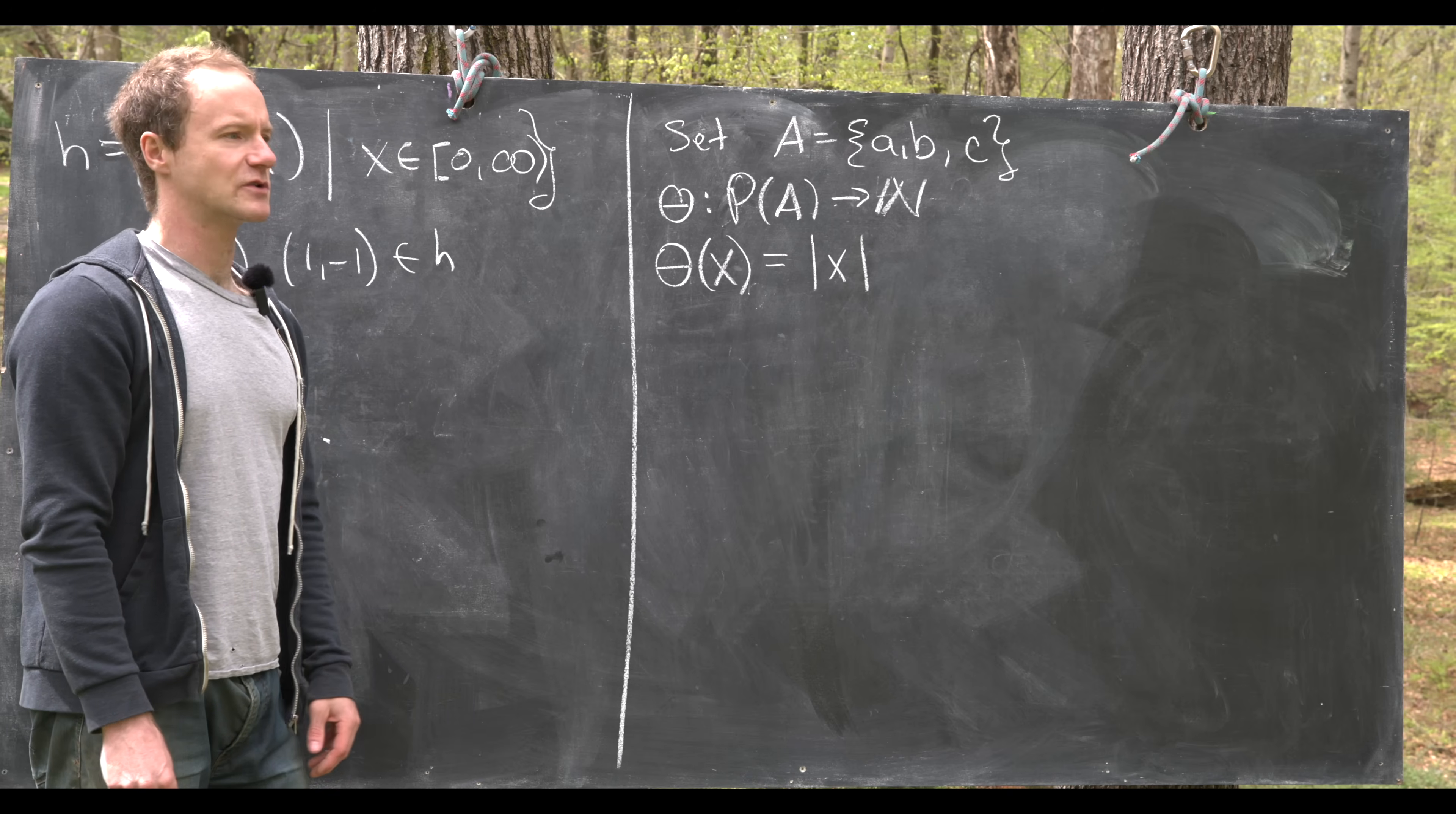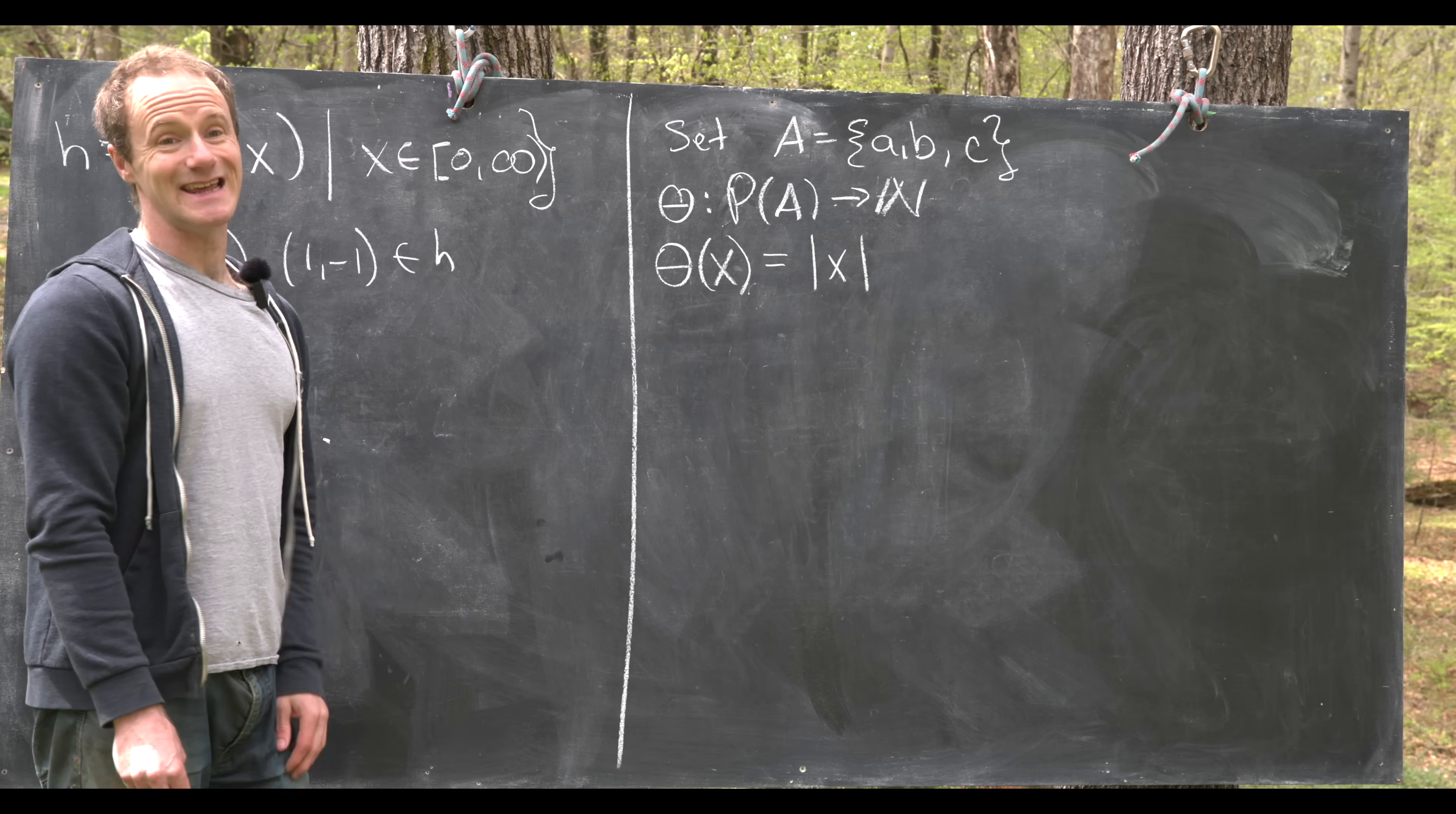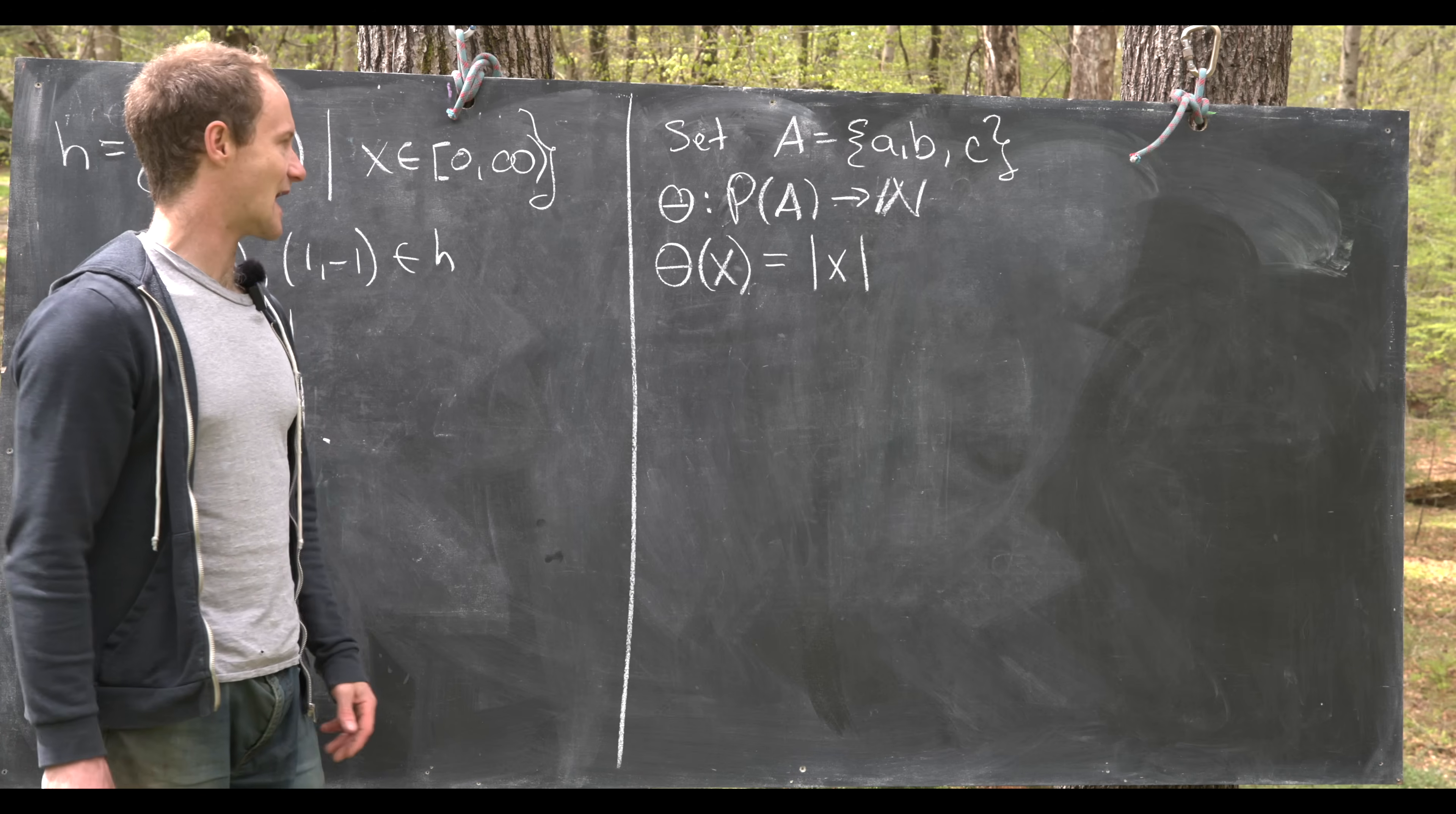So let's recall that the power set is the set of all subsets and it's defined by θ(X) equals the cardinality of X or the number of elements in X. And this is a function and you can see that it's a function essentially because we've got like a formula that describes it. But we could also like see exactly what happens here.